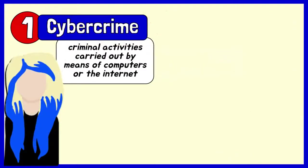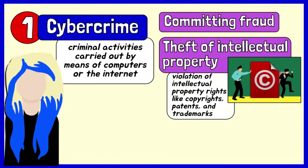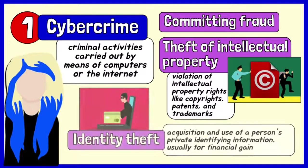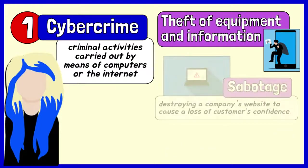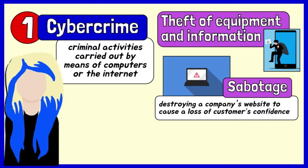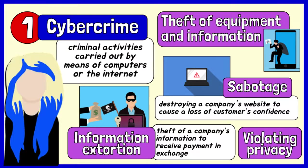Cybercrime is the use of a computer or the internet as an instrument to carry out or further illegal activities, such as committing fraud; theft of intellectual property, which means violation of intellectual property rights like copyright, patent, and trademark; identity theft, which means acting as someone else to obtain a person's personal information and use it for financial gain; theft of equipment and information; sabotage, which refers to destroying a company's website to cause a loss of customers' confidence; information extortion, which means the theft of a company's property or information to receive payment in exchange; and violating privacy.